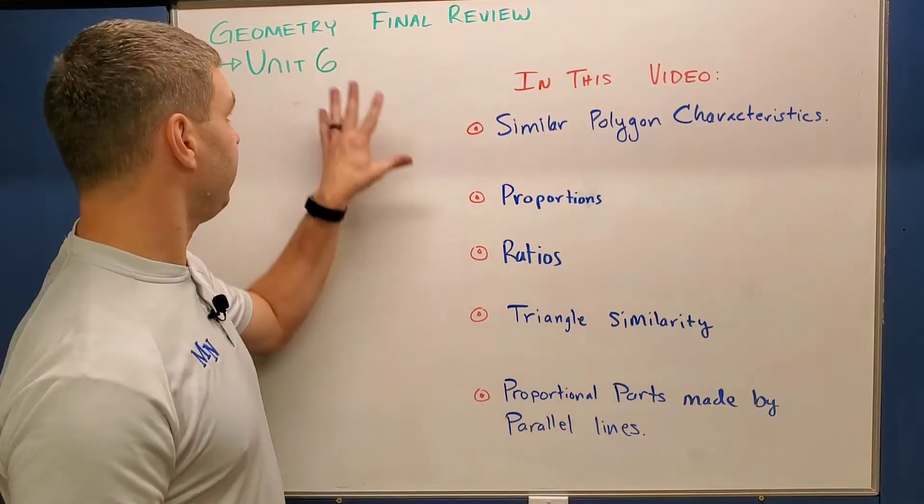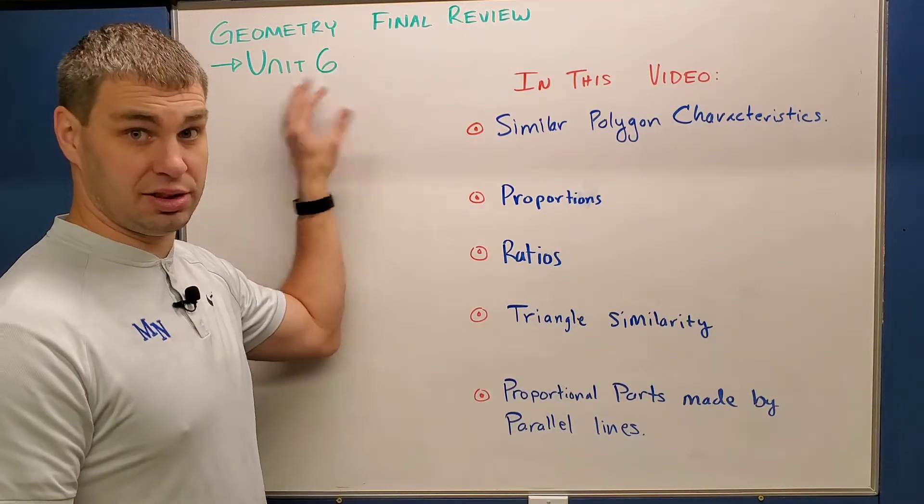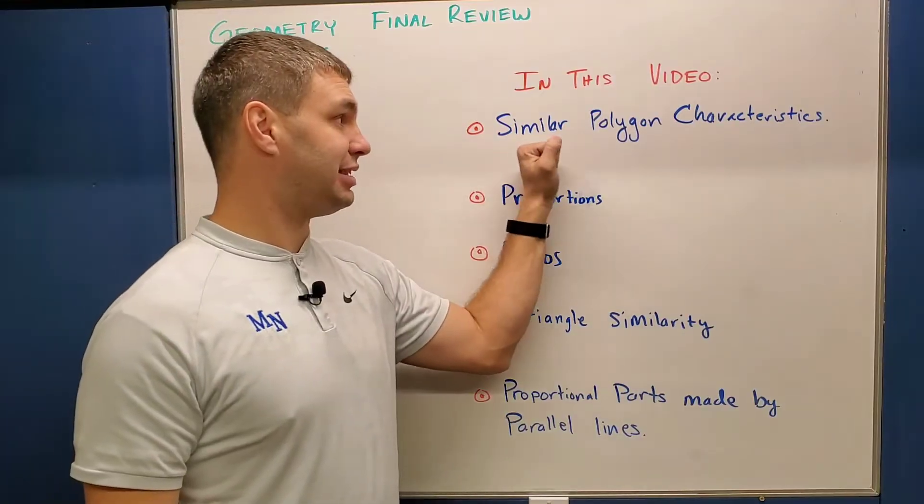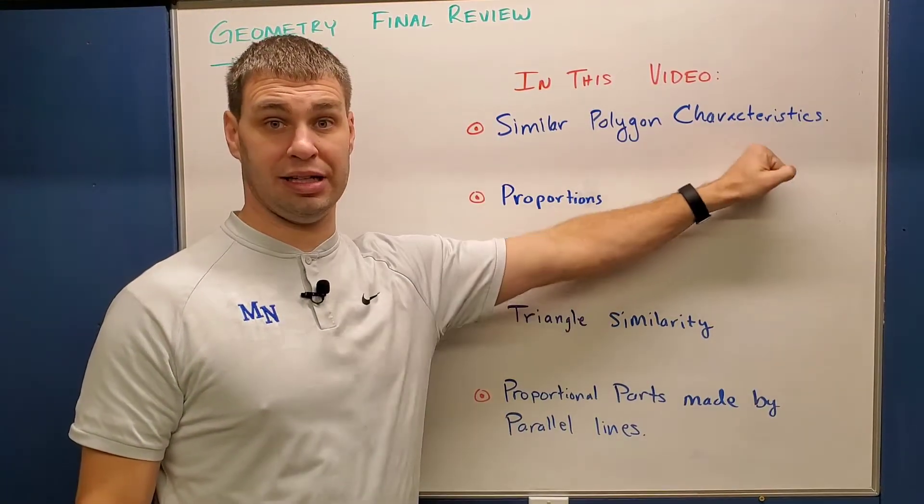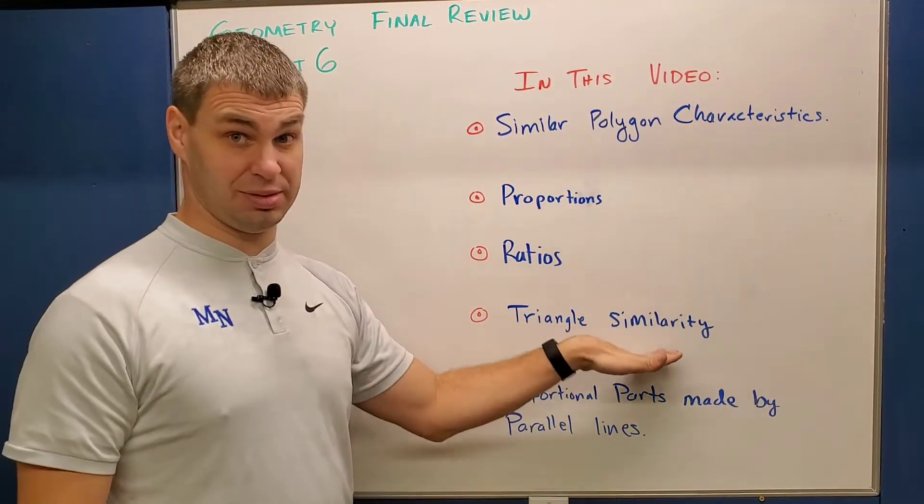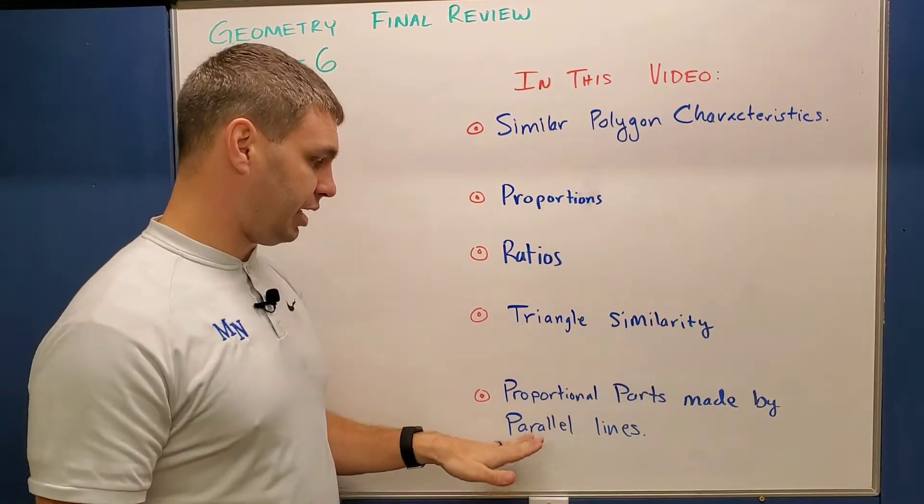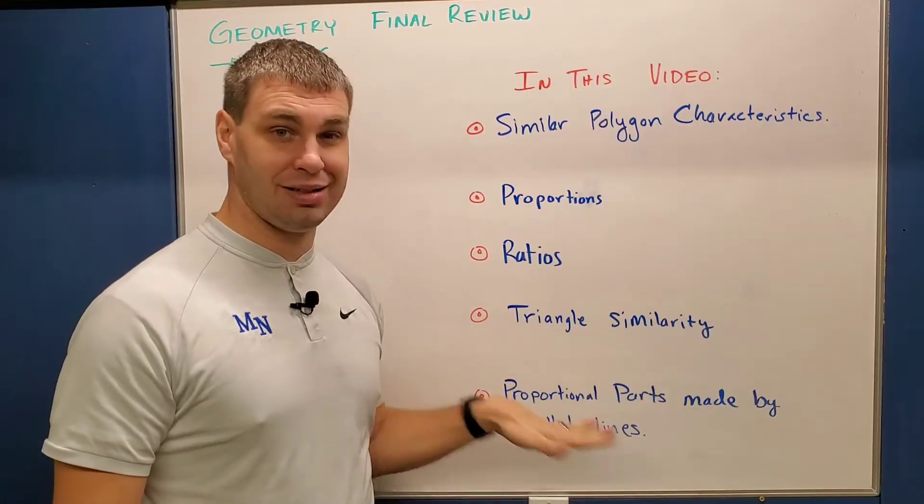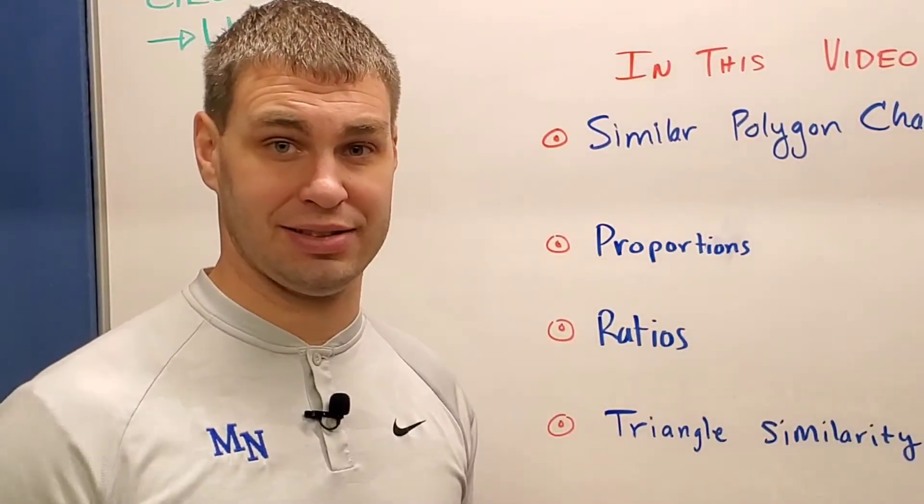This will be our last video where we study for our first semester final, and this is all about Unit 6, which is about similar polygons. We're going to go over similar polygon characteristics as well as give you some proportion problems, some ratio problems, triangle similarity, and as well as proportional parts made by parallel lines. Say that three times fast. Let's get into it.